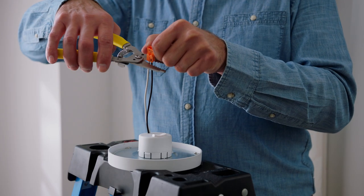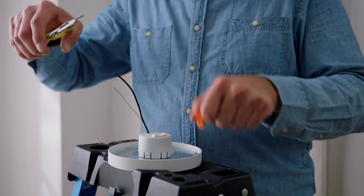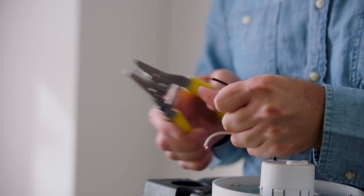Next, cut the connector from the disc light, leaving a few inches of wires. Then strip the wires with the wire stripper.